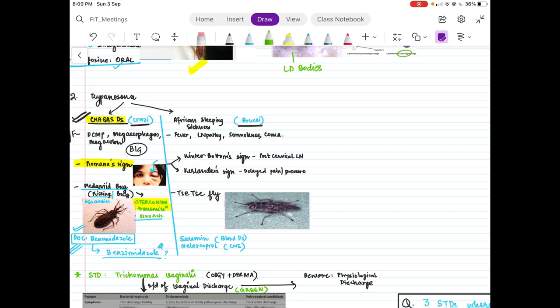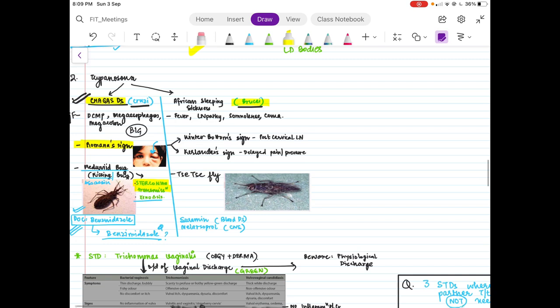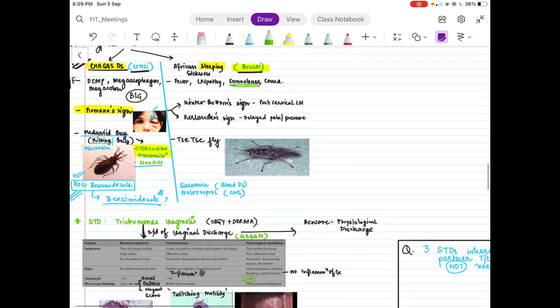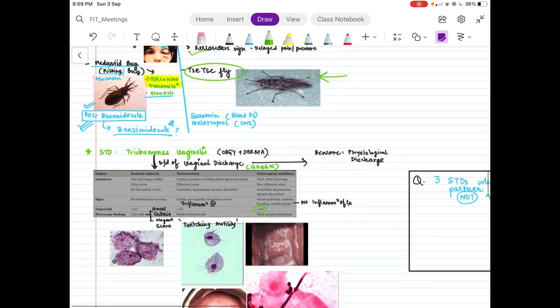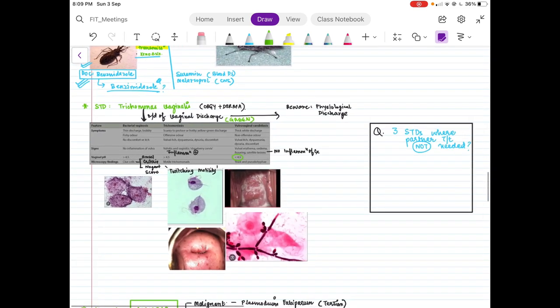Another is African sleeping sickness which is caused by Trypanosoma brucei. The clinical features will be fever, lymphadenopathy, somnolence. African sleeping sickness, remember somnolence. It is a CNS disease. The two signs are Winterbottom sign and Kerandel sign, and the vector is tsetse fly. Image again important.